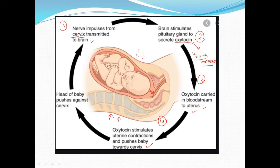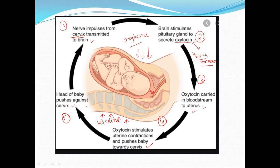Oxytocin stimulates the uterine wall and pushes the baby — that means contraction of the uterine wall. It is a peristalsis movement: a wave-like contraction and relaxation of the uterus so that the baby is pushed towards the cervix, causing the birth of the baby. In the fifth stage, the head of the baby pushes against the cervix, and thus the child is born. The birth of the child is the end point of this positive feedback loop.